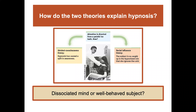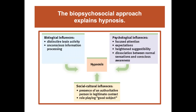Is it a dissociated mind or a well-behaved subject? The biopsychosocial approach, mentioned many times throughout this course, explains hypnosis through multiple influences: biological influences include distinctive brain activity and unconscious information processing; psychological influences include focused attention, expectations, heightened suggestibility, and dissociation between normal sensations and conscious awareness; sociocultural influences include the presence of an authoritative figure in a legitimate context and the role of playing a good subject. All of these combine to explain how hypnosis happens.